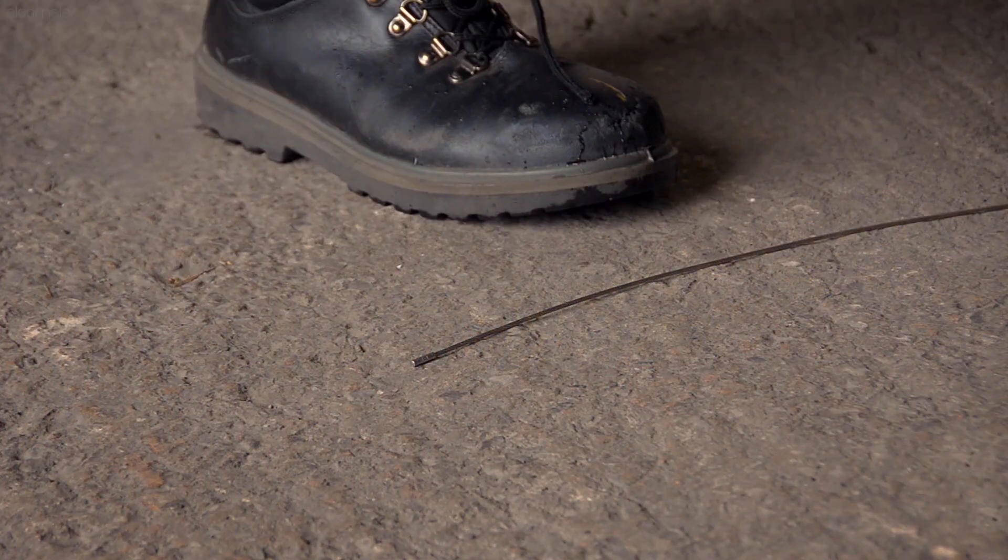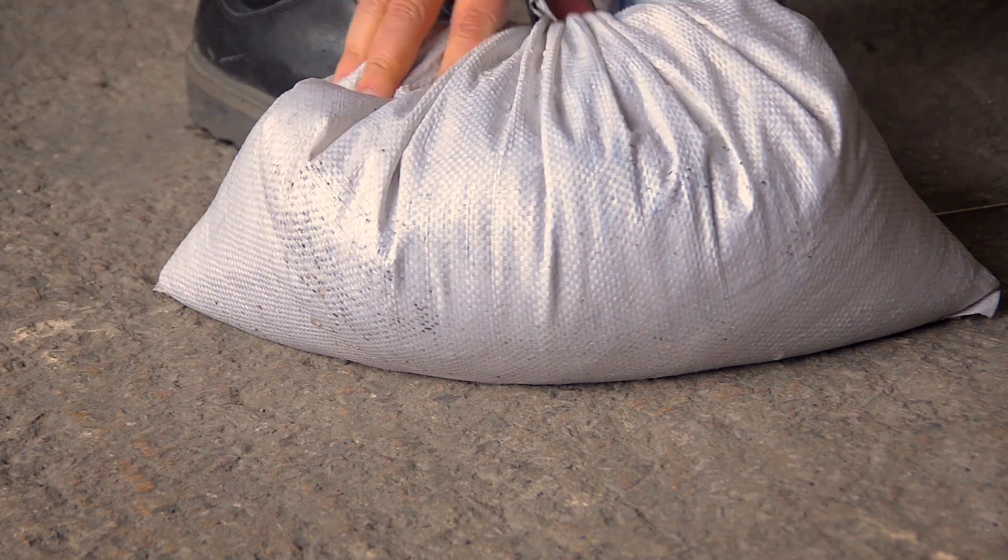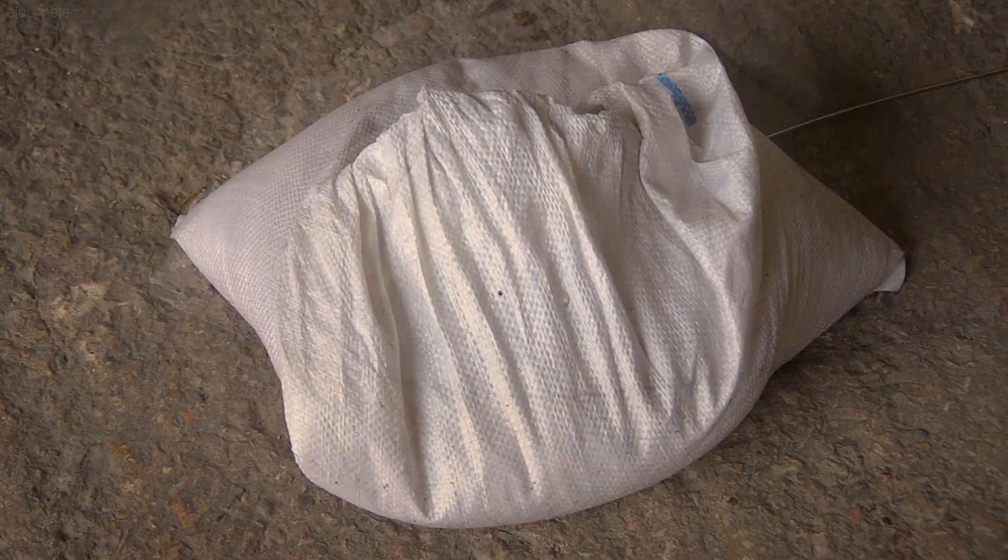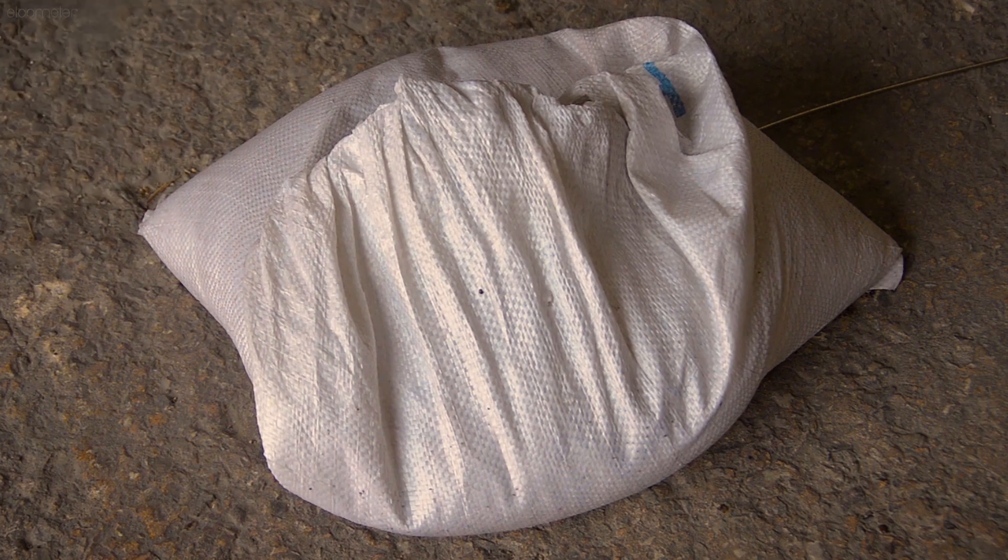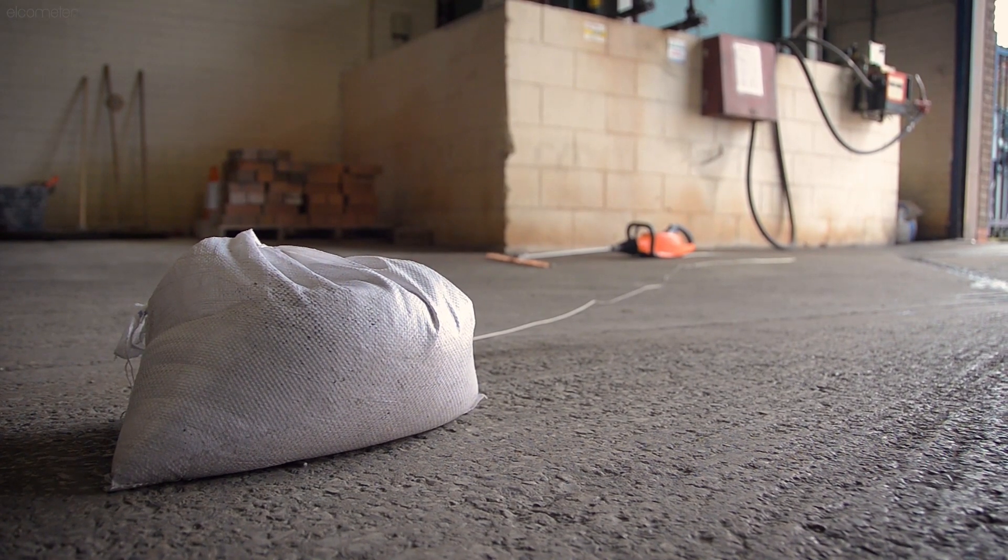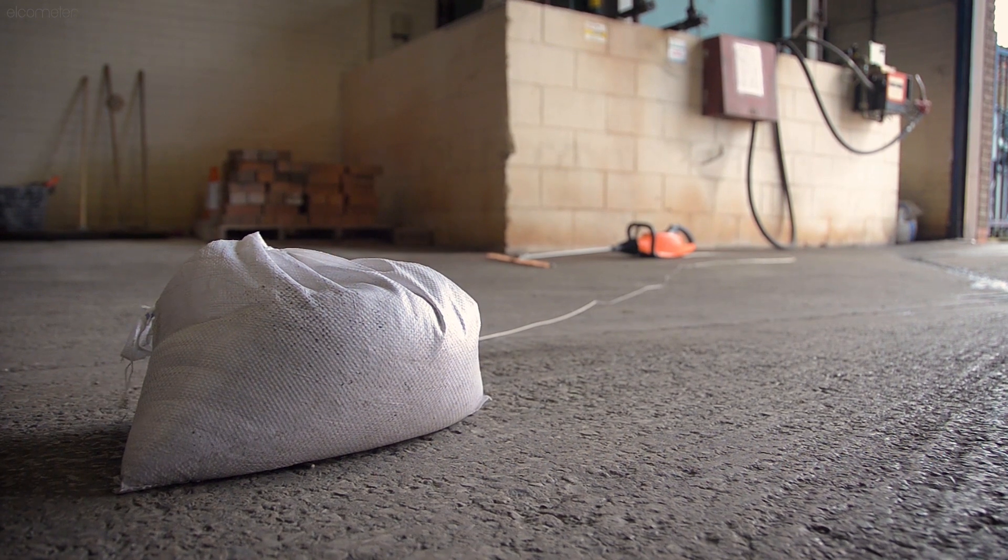Simply place the trailing earth return cable against the bare concrete, and place a damp cloth or wet sand filled paper bag on top of it. This simultaneously makes a secure contact point for your earth return cable, and adds moisture to the concrete, aiding the conductivity of electricity.